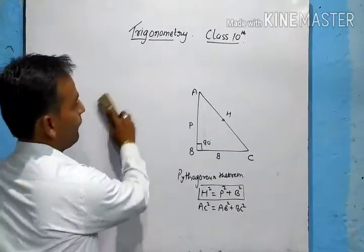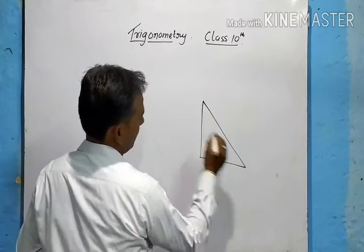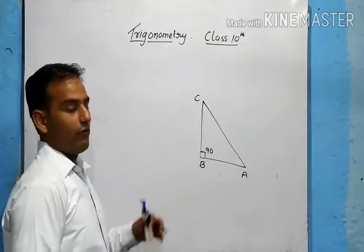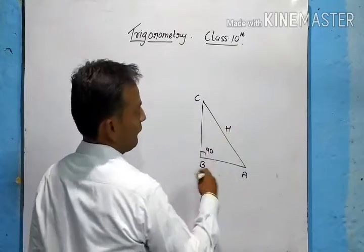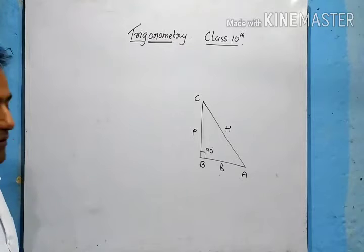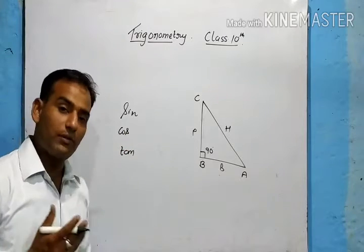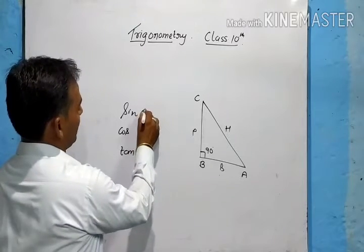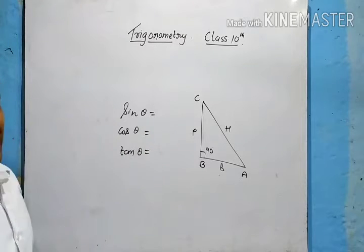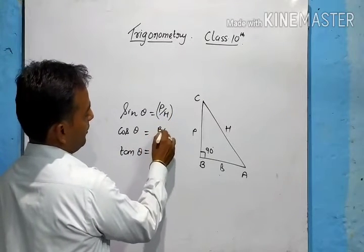In class 9 we studied trigonometric ratios. If we have a right angle triangle ABC with the 90 degree angle at C, then the hypotenuse is opposite the 90 degree, one side is perpendicular, and one is base. The three main trigonometric ratios are sin θ, cos θ, and tan θ. Sin θ equals perpendicular upon hypotenuse, and cos θ equals base upon hypotenuse.